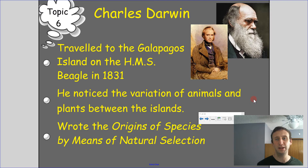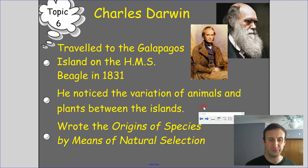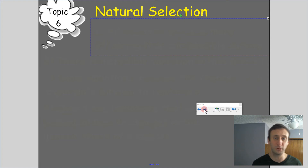When he looked at all the different beaks of these birds, they were finely tuned to deal with the food source on each particular island — matching structural and probably behavioral adaptations to the food sources on those islands. He noticed variation in animals and plants between islands and wrote the Origin of Species by means of natural selection, which is the basis for the theory of evolution.